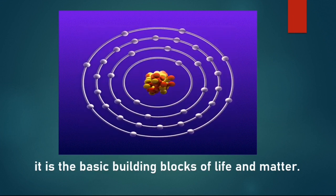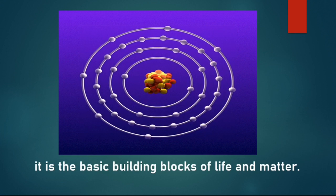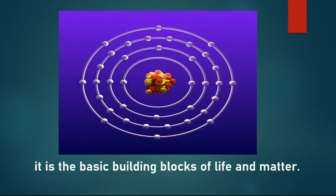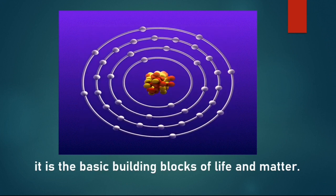Each atom has a center nucleus where the protons and neutrons are densely packed together. Surrounding the nucleus are a group of orbiting electrons.